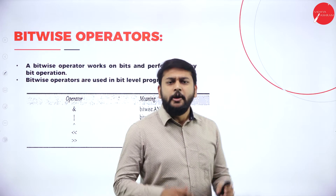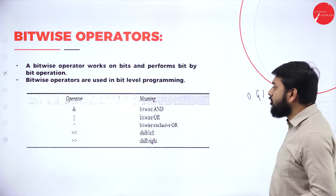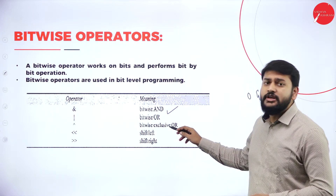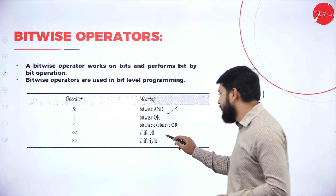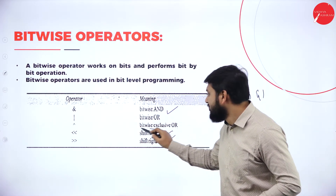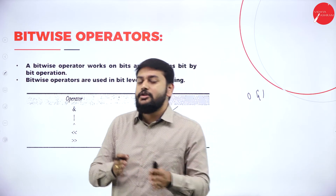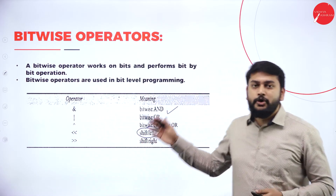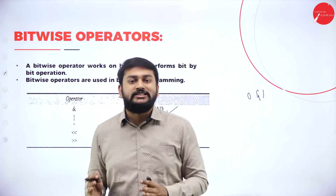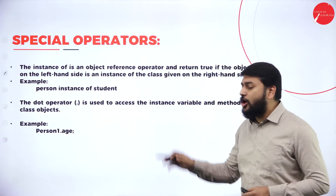Bitwise operators are used to deal with binary bits — zeros and ones. They include bitwise AND, bitwise OR, bitwise exclusive OR (XOR), shift left, and shift right. Shift left and shift right operators shift the bits towards the left or right respectively. That is why they are called bitwise operators.